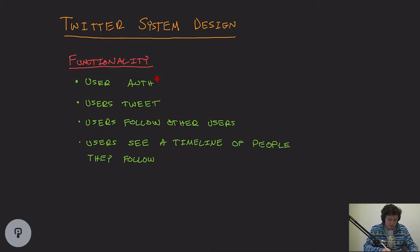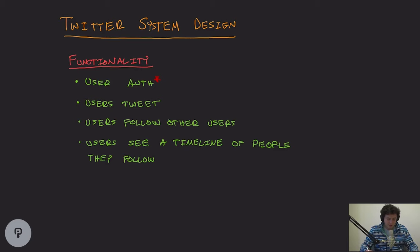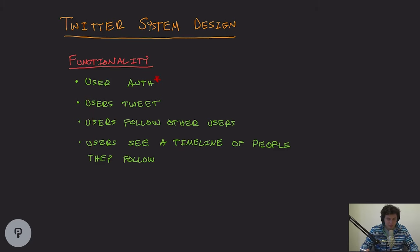For today, we're going to focus on these four bullet points. The first bullet is user authentication, which we have a little star next to. The reason we have the star is because we're not really going to be covering that in depth here — we're just going to imagine that all of our endpoints are authenticated, because you should be expected to know how user authentication works.